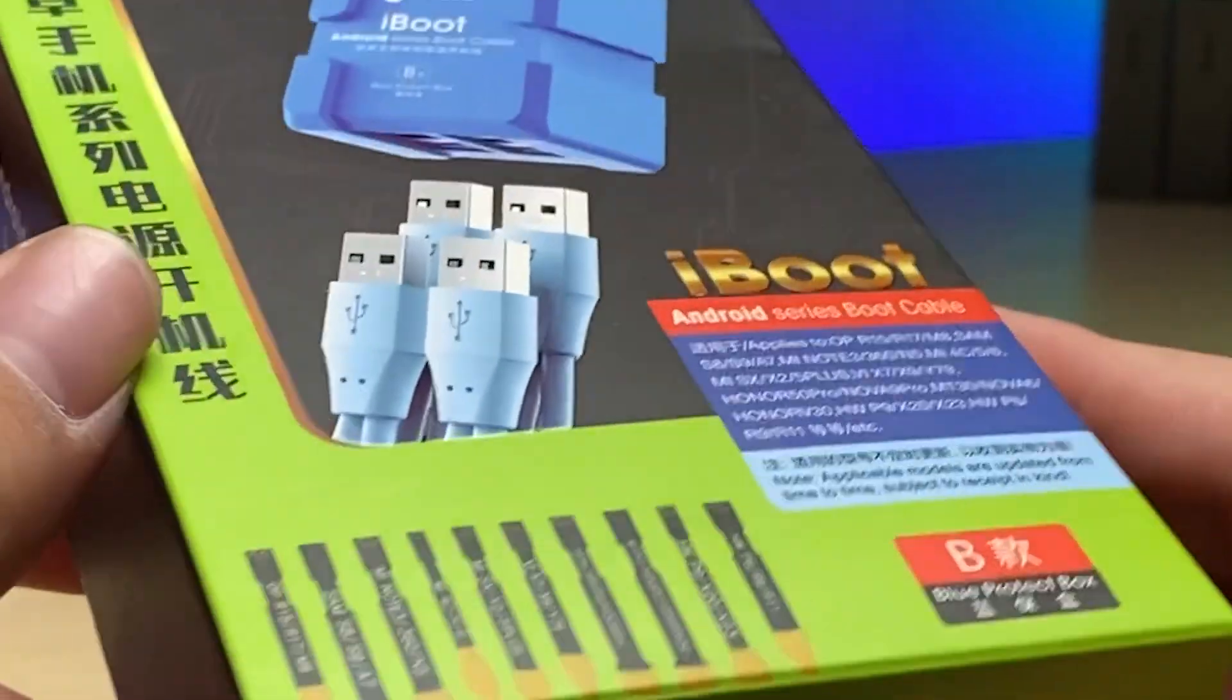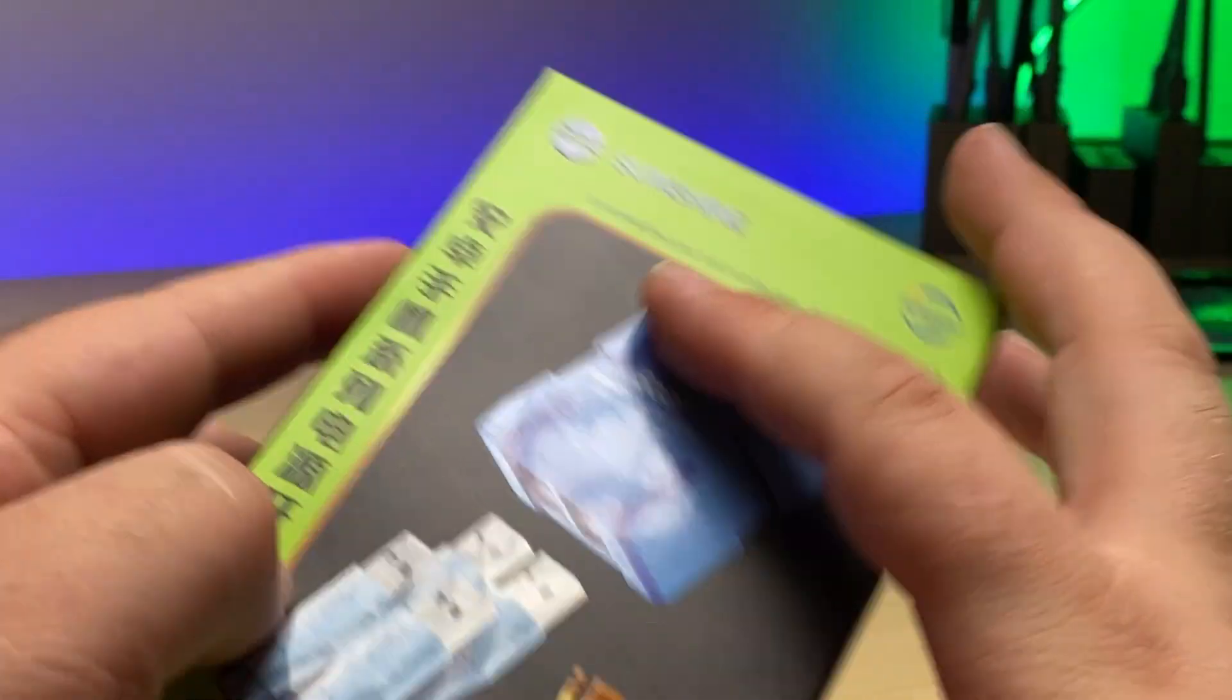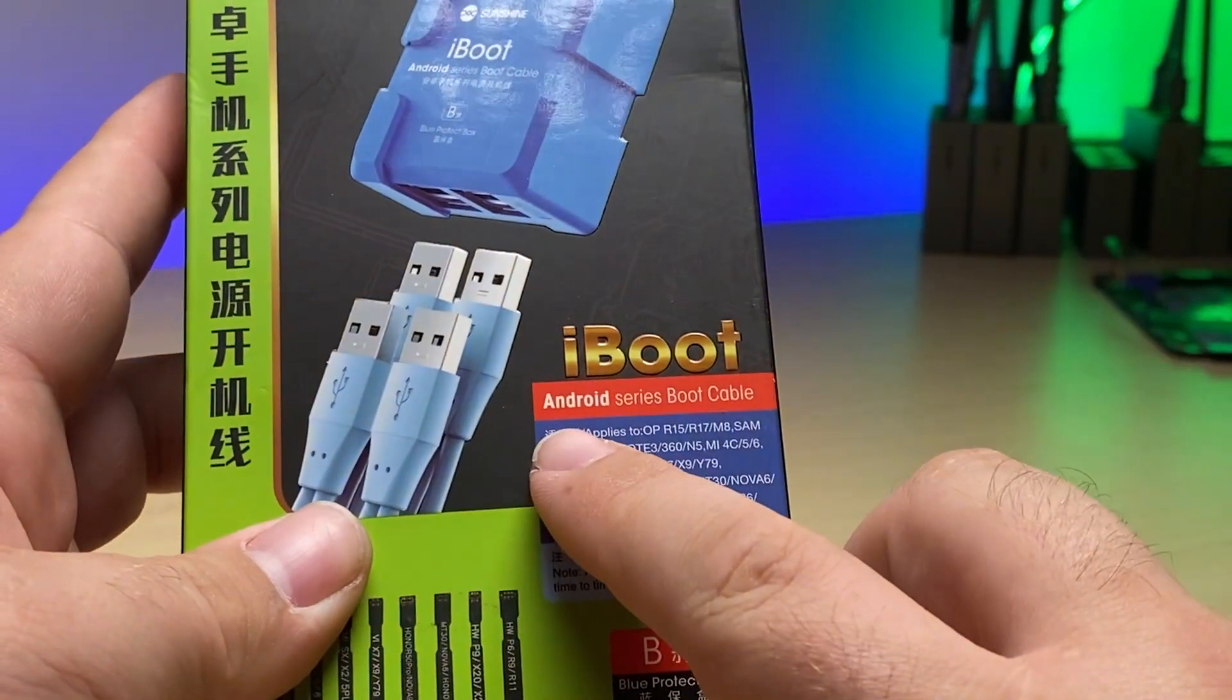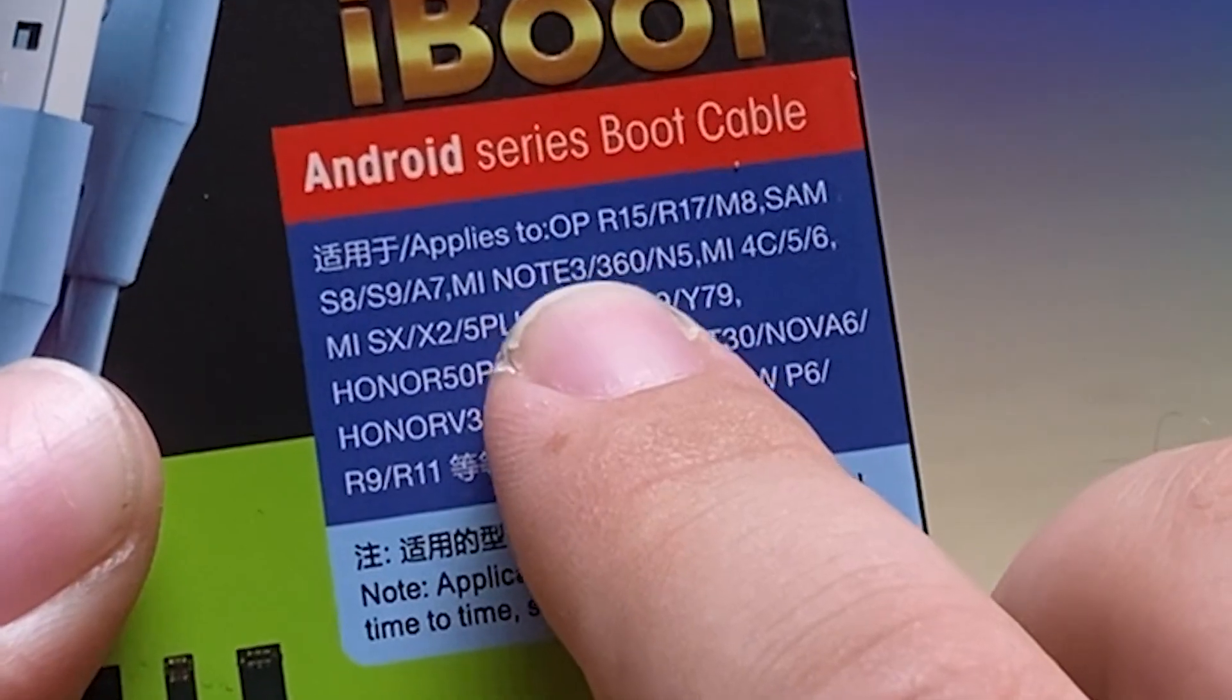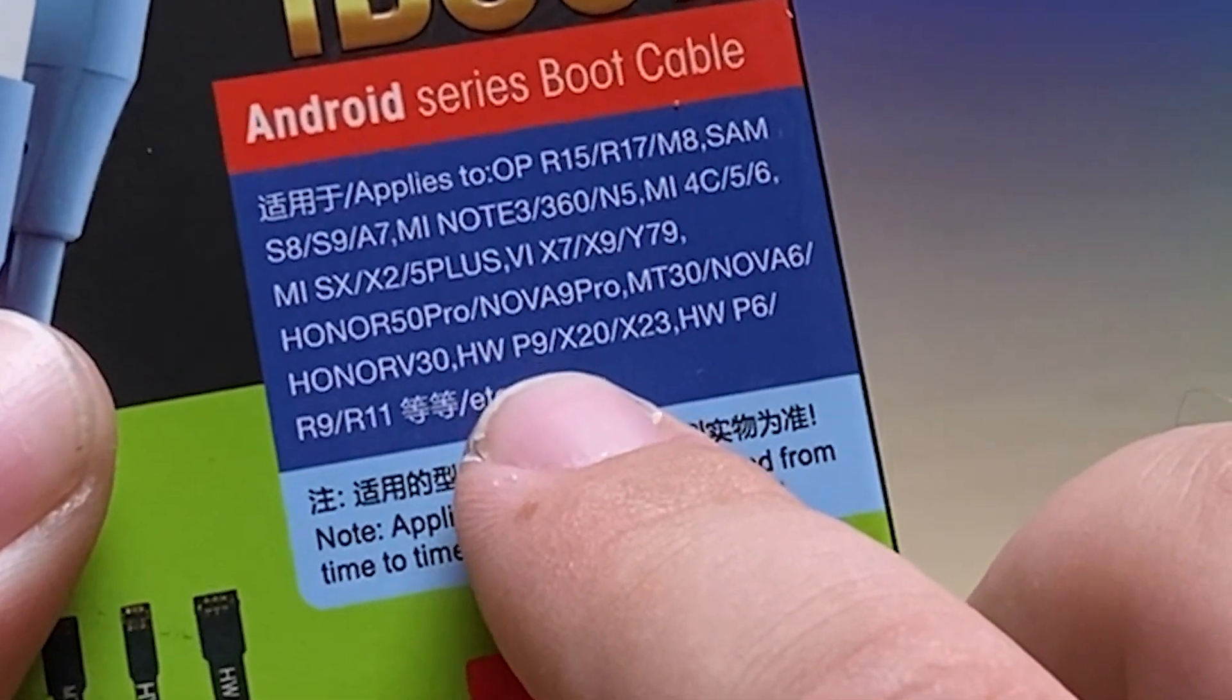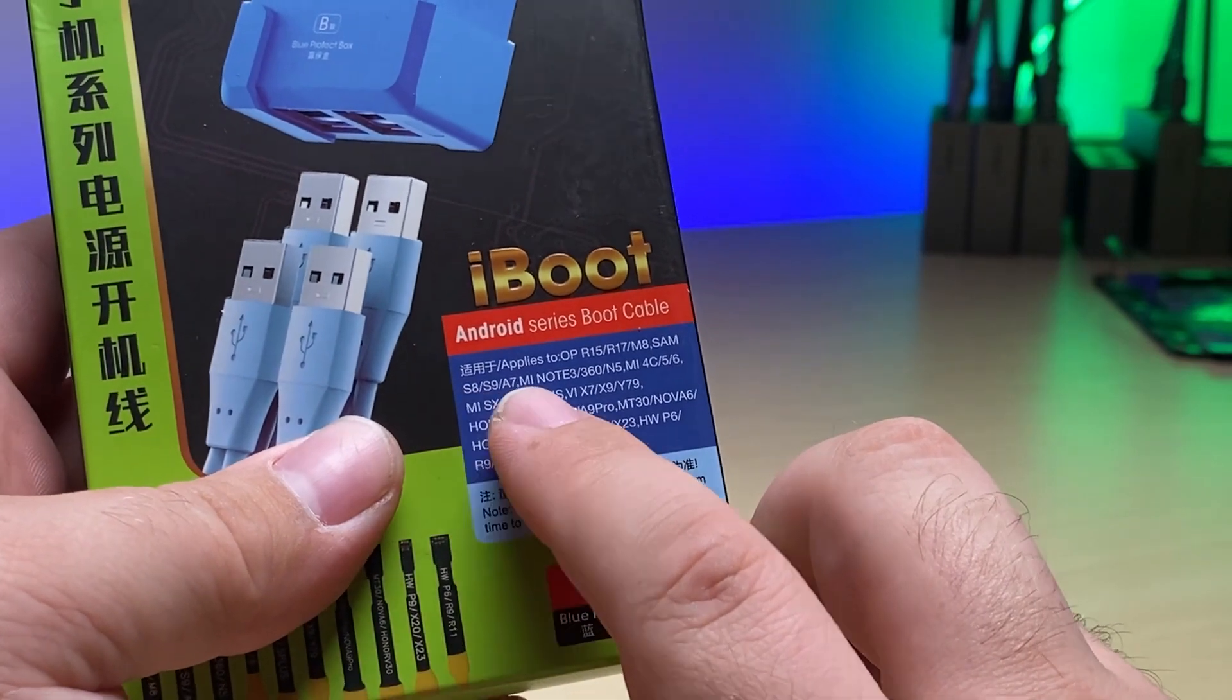We've had enough people ask, what is the iBoot? This one's made by Sunshine and it's specifically for the Android series. You can see here a range of all the different models that it covers. A lot of the Samsung S series, Note series...